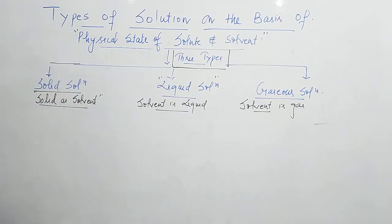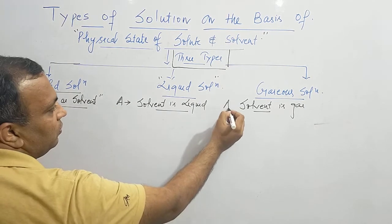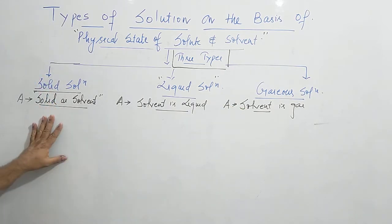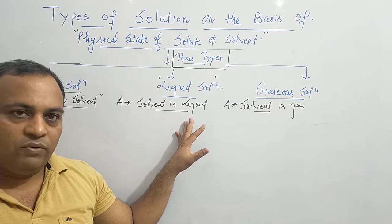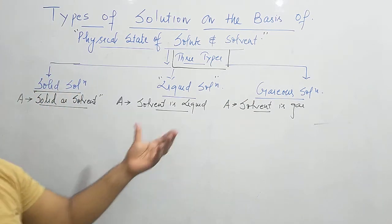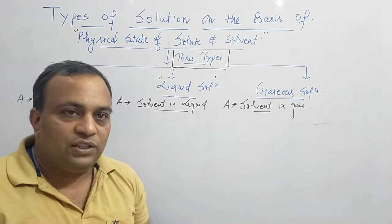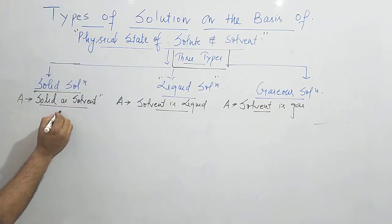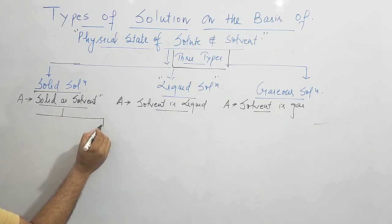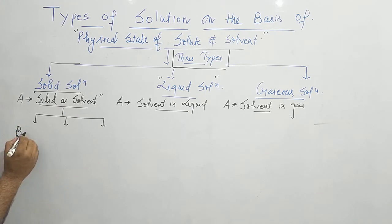Now, one thing will be fixed in all the cases: 'A' stands for solvent. In solid solution, solvent is solid. In liquid solution, solvent is liquid. Whereas in the gaseous solution, the solvent is gas. Now on the basis of the state of the solute, we will classify them further into three types each. So solid solution is of three types.